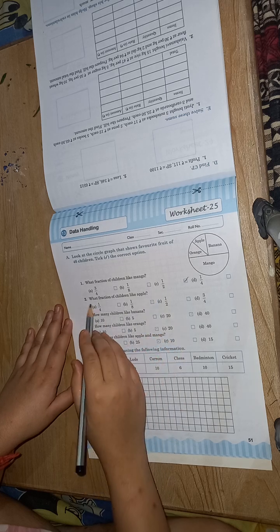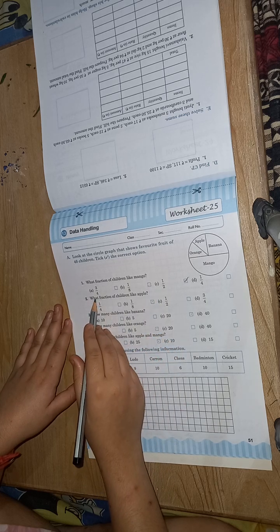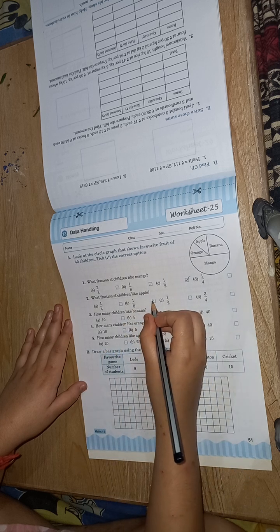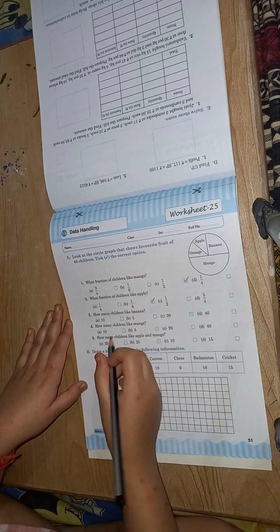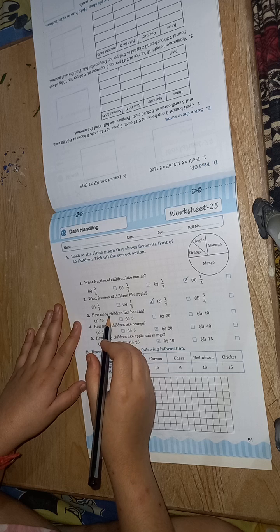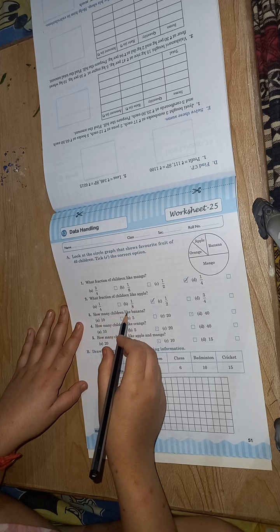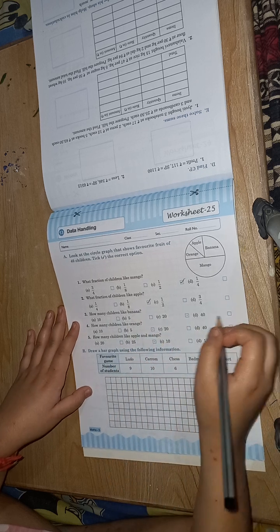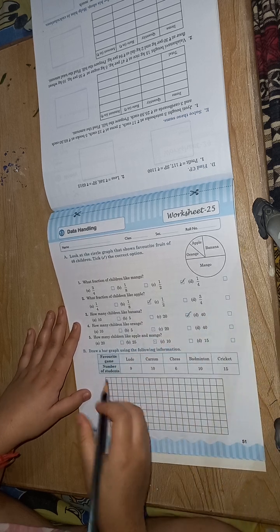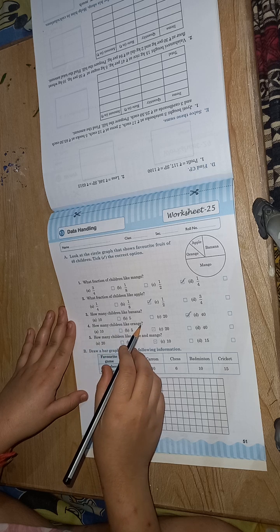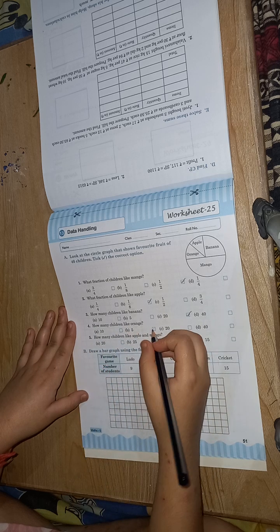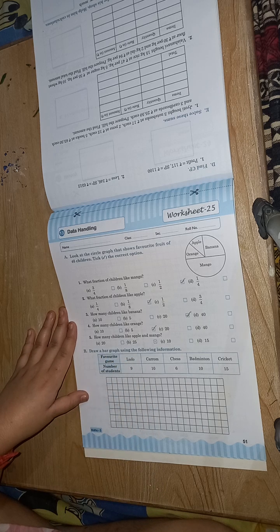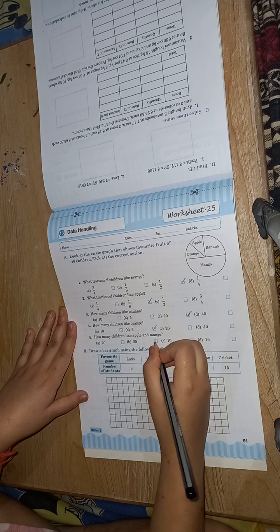One by two. What fraction of children like apple? One by eight. How many children like banana? Twenty. How many children like orange? Five. How many children like apple and mango? Twenty-five.